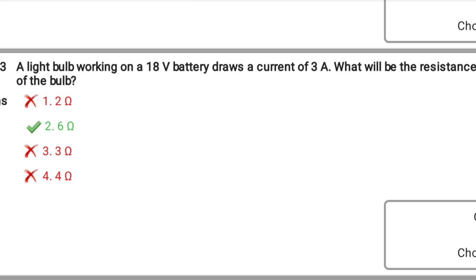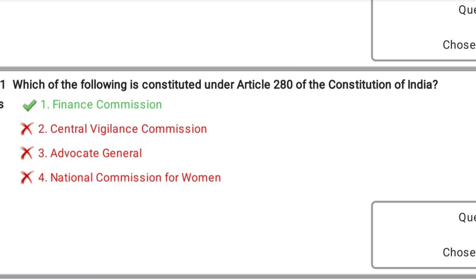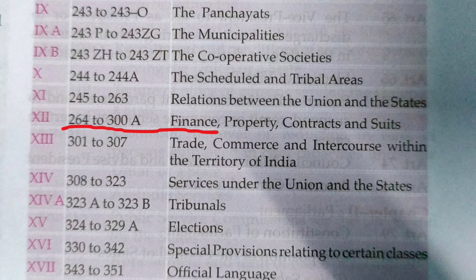Again V equal to IR. You can directly use this formula. Here you can, it is given as V equal to IR. So just substitute the values, 36 by 18, that means 6. Article 280. If you have a rough idea like parts, you can answer this question. Just 280 means it lies in this 12th part. So you can mark it as finance commission.